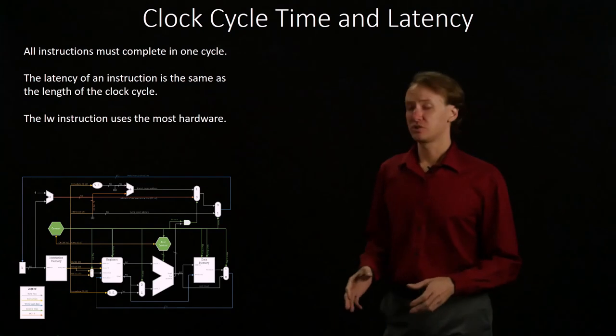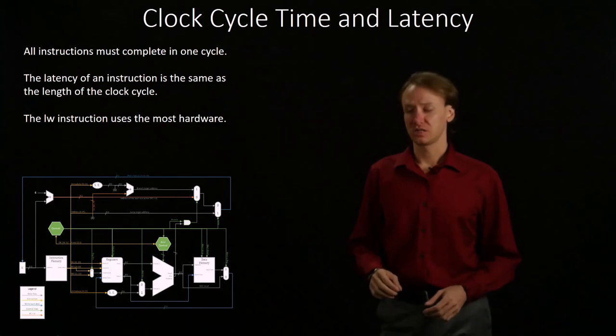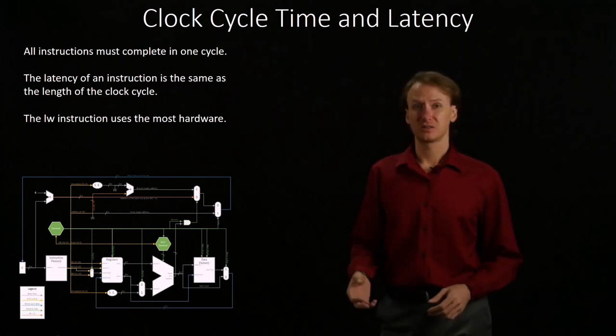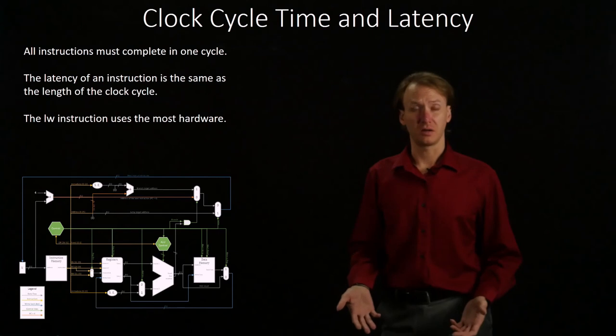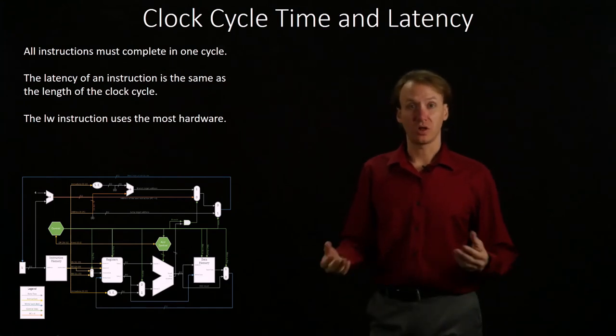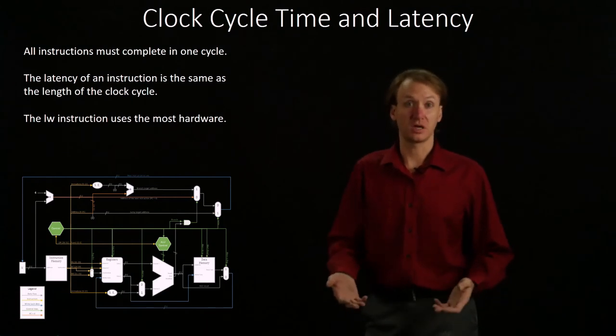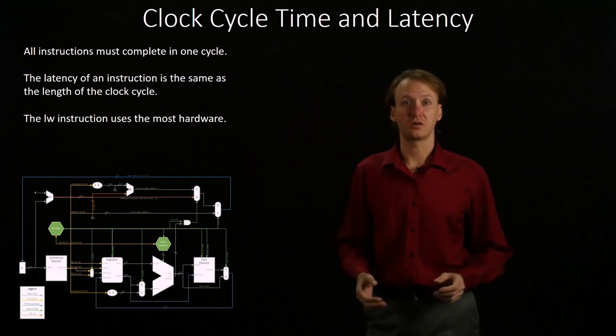Latency for an instruction is how long it takes a single instruction to complete. In our single cycle architecture, it turns out that's the same as the clock time. In this case, every instruction takes one clock cycle to complete, so the amount of time it takes an instruction to complete is one clock cycle, however long that one clock cycle is.